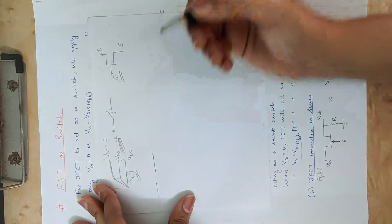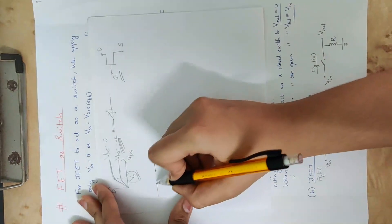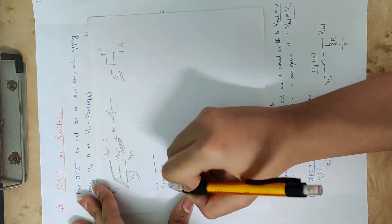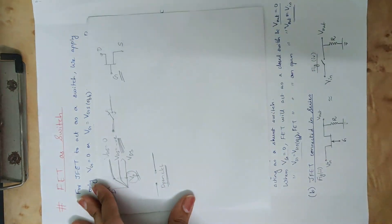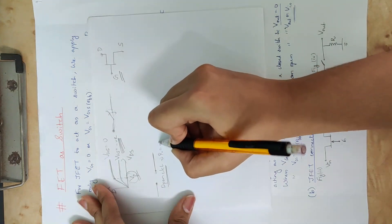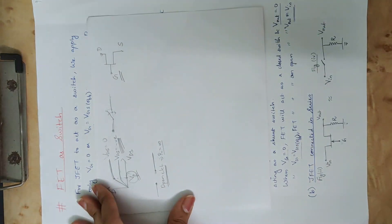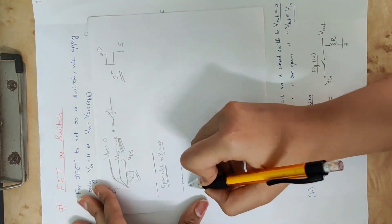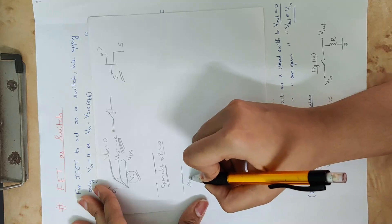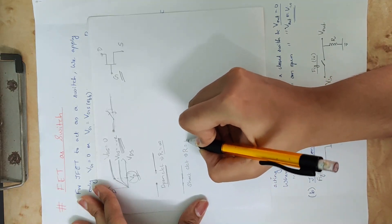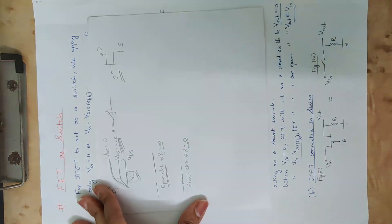If we call this circuit open, we assume resistance equals infinity. If it is a short circuit, resistance equals zero ideally.